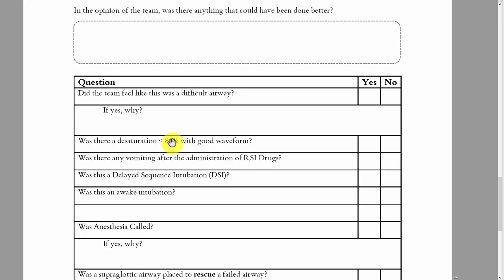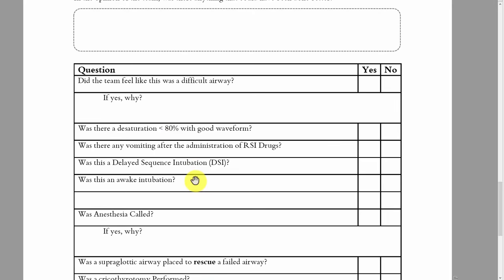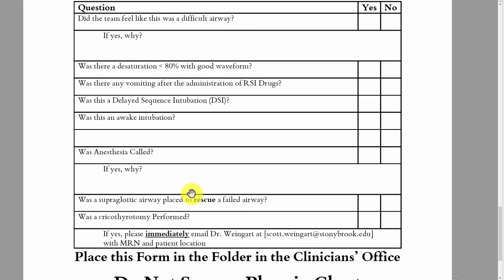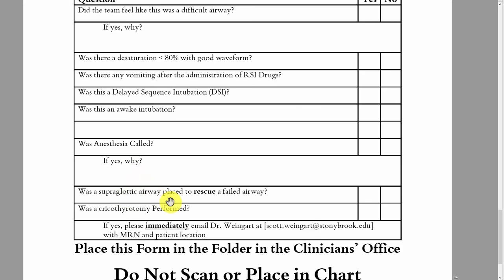Was there vomiting after the RSI drugs were administered? Was this a delayed sequence intubation — meaning the patient was given ketamine, pre-oxygenated after the ketamine, and only then was the paralytic pushed? Was this an awake intubation, meaning they never paralyzed the patient and the patient was spontaneously breathing throughout? Was anesthesia called, and if so, why? Was a supraglottic airway placed to rescue a failed airway — meaning placed because sats were dropping and they couldn't bag or intubate the patient?